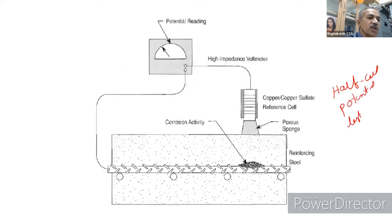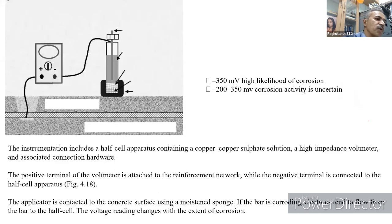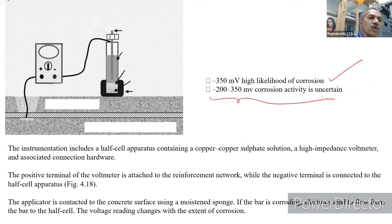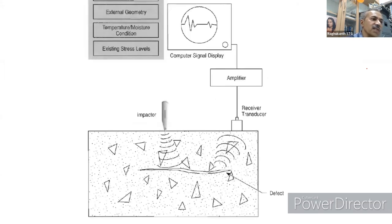In the half-cell potential test, a copper sulfate solution apparatus is connected to the steel rod. During corrosion, cathode-anode action causes electrons to move, recording voltage. Using standard charts, you can determine whether and how much corrosion has occurred. Impact echo testing is another non-destructive method: an impact creates stress waves, and changes in the recorded signal identify internal cracks and their size.